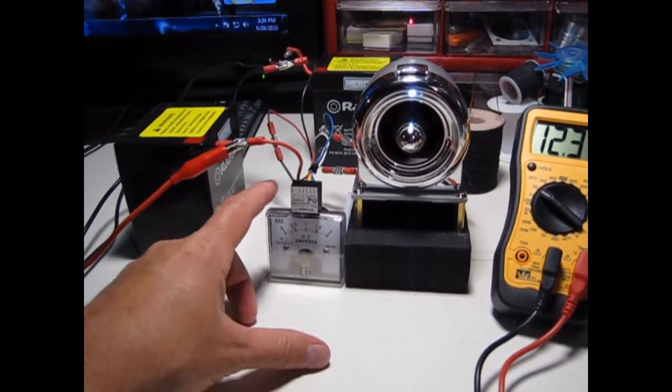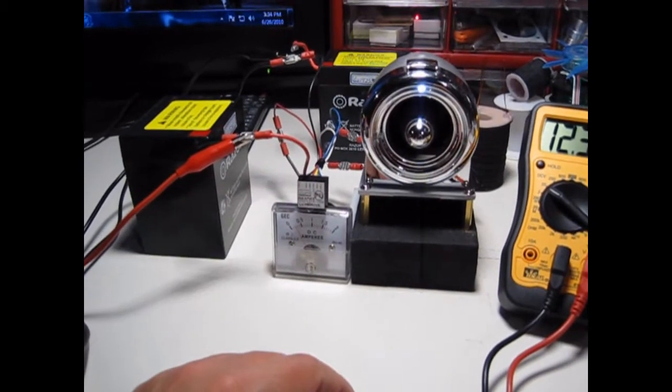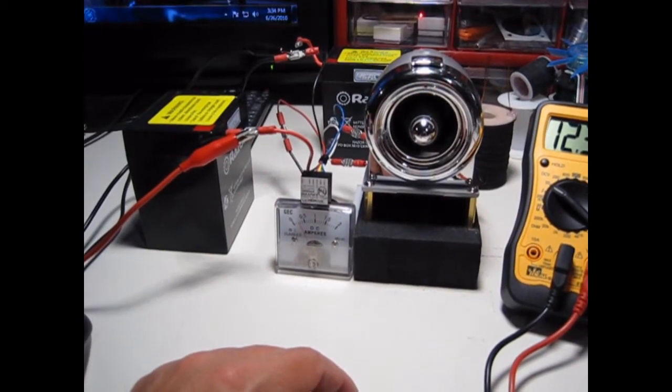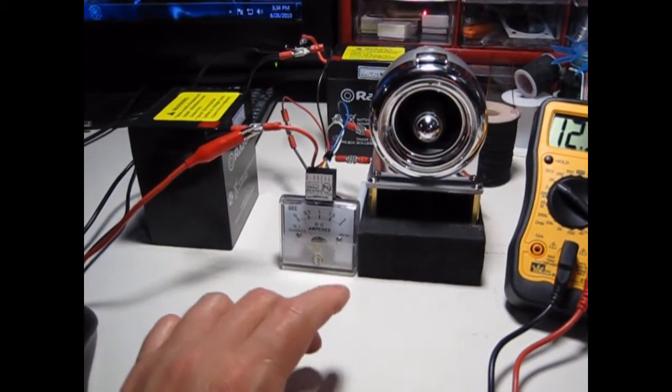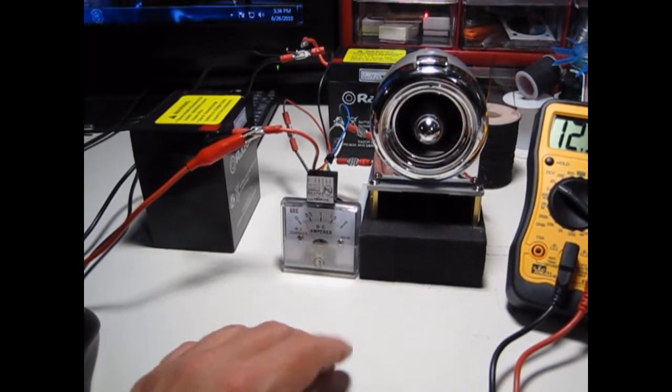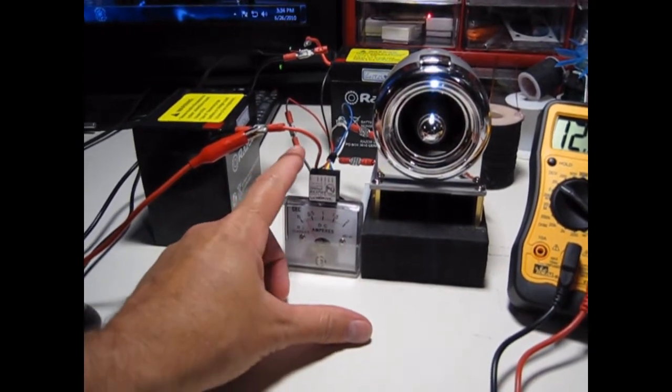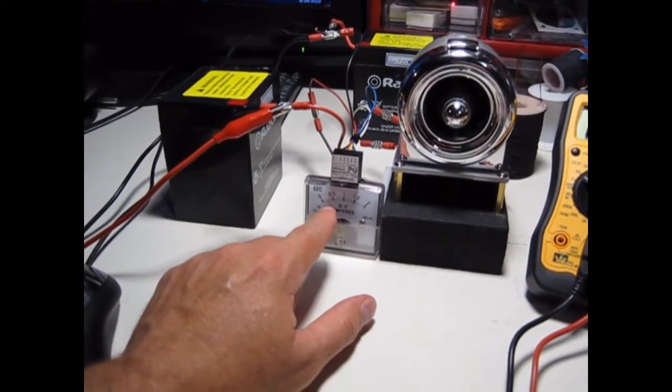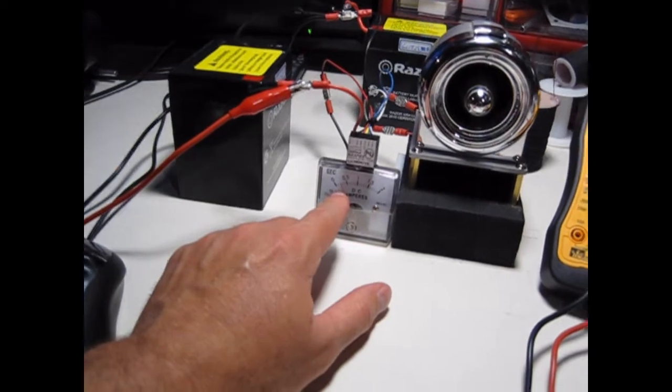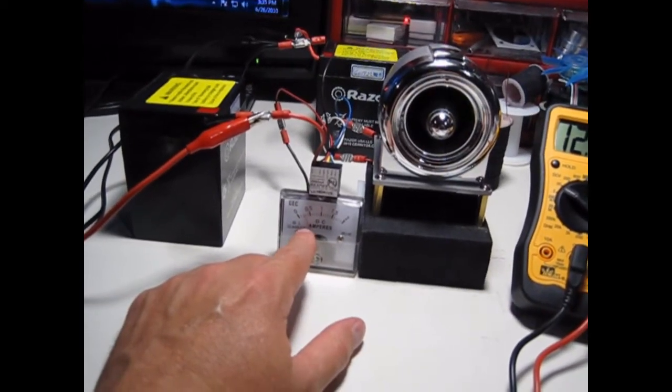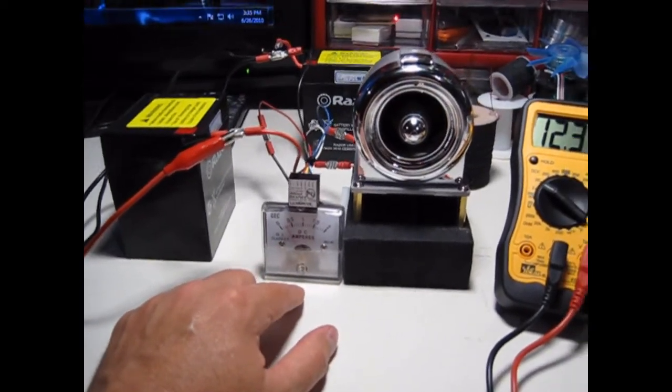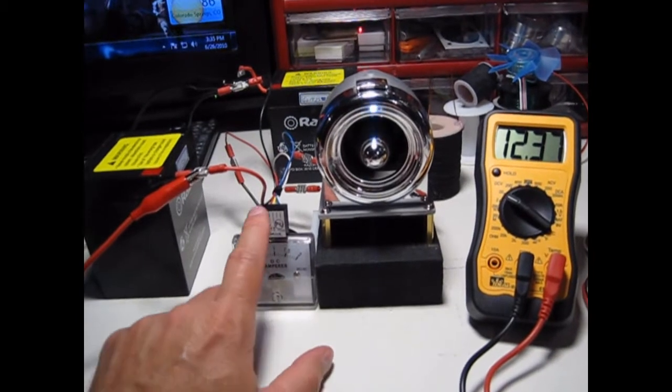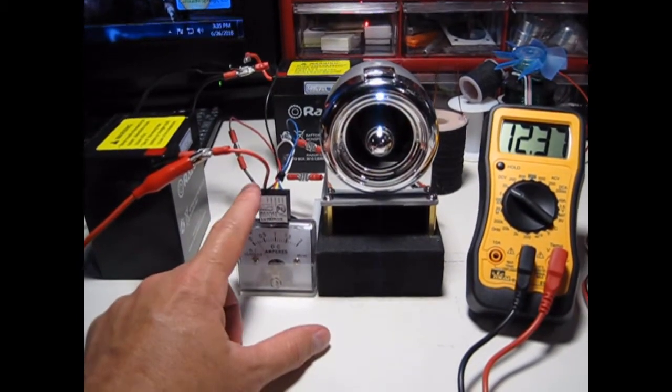So I had a couple of these LuxDrive buck pucks. They're a current regulator mostly used for high output LEDs, which I play around with too. So I thought I would use this buck puck to control the discharge rate of the battery. And I've got it locked in right at 250 milliamps.